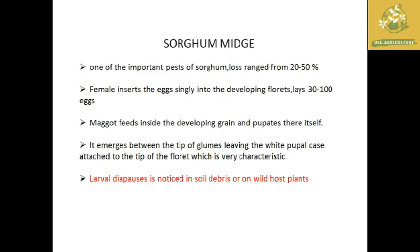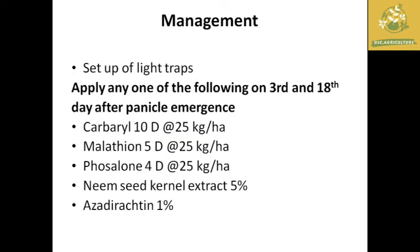The sorghum midge is an important serious pest causing a loss range of 20 to 50 percent in severe conditions. The female lays eggs inside developing florets, around 30 to 100 eggs per female. Larvae can be found in soil debris and wild host plants. The white pupal case attached to the tip of the floret is an important diagnostic characteristic. Management includes light traps and insecticide applications like carbaryl, malathion, phosphamidon, and neem seed kernel extract during and after panicle emergence at the 18th day.